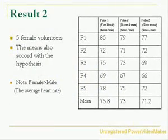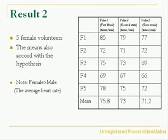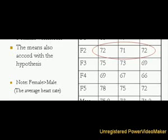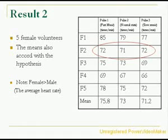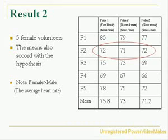Here are the results of our five female participants. Similarly, the average heart rates of the five female volunteers are higher in the fast music condition and lower in the slow music condition. However, we can still see some deviations in Female 2. In general, we can conclude that the results satisfy our hypothesis.